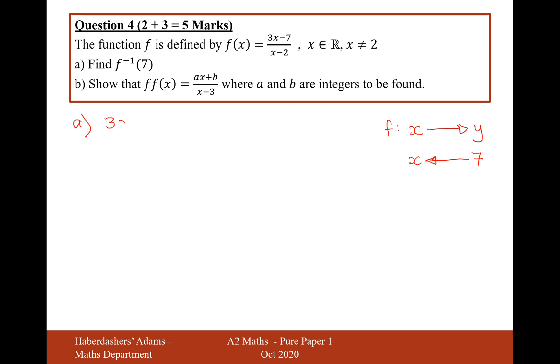So what I'm going to do here is I'm going to sneakily do 3x minus 7 over x minus 2 equals 7. It's effectively the same question. It's effectively, if your output is 7, find out what your input is. So let's now work out this answer.